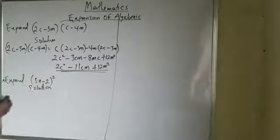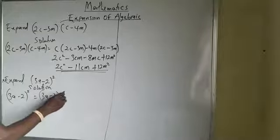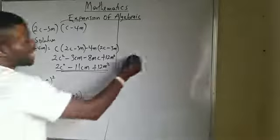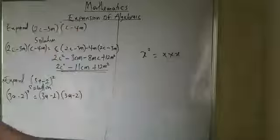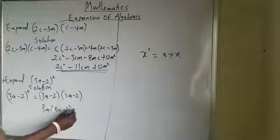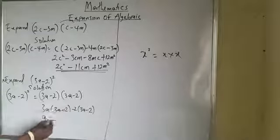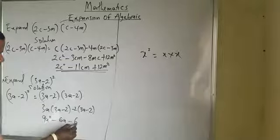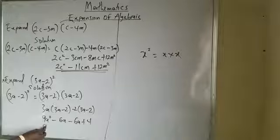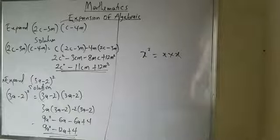Now (3a − 2)² can be written as (3a − 2)(3a − 2). Expanding: 3a(3a − 2) − 2(3a − 2) = 9a² − 6a − 6a + 4 = 9a² − 12a + 4. That is the final answer. This is called a perfect square — I will explain that concept further shortly.